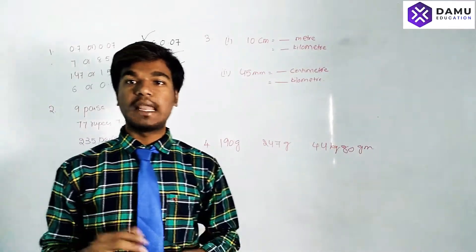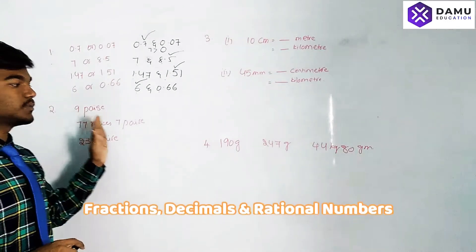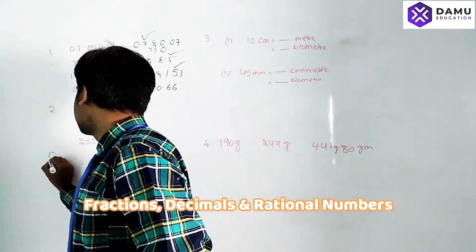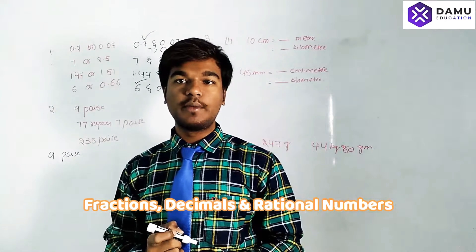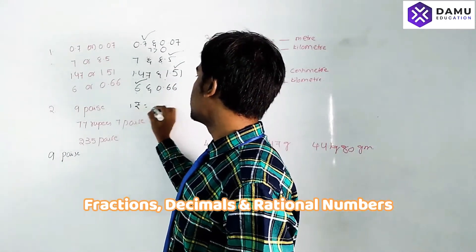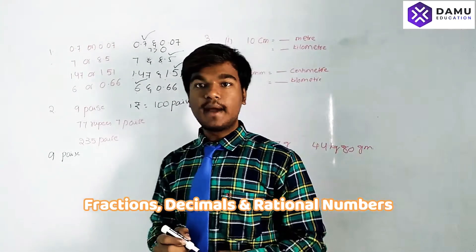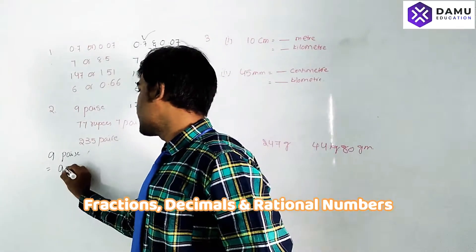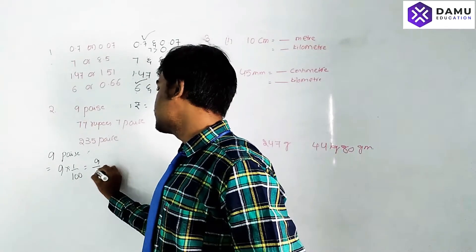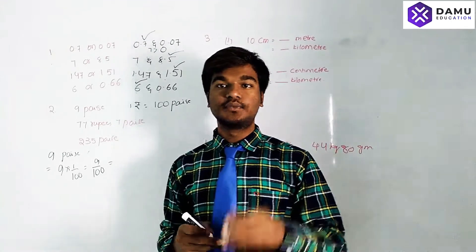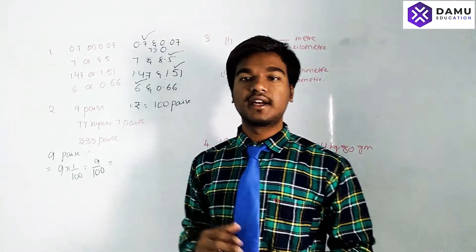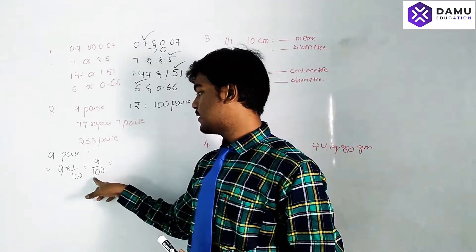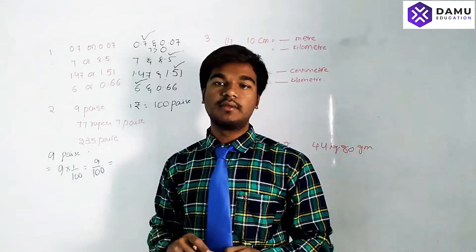Next, we have to express these numbers in rupees. So nine paise — how to express. One rupee is equal to one hundred paise, so one paise equals one by hundred rupees. Therefore nine paise equals nine by one hundred rupees. Now how to write nine divided by one hundred — there are two zeros in the denominator.